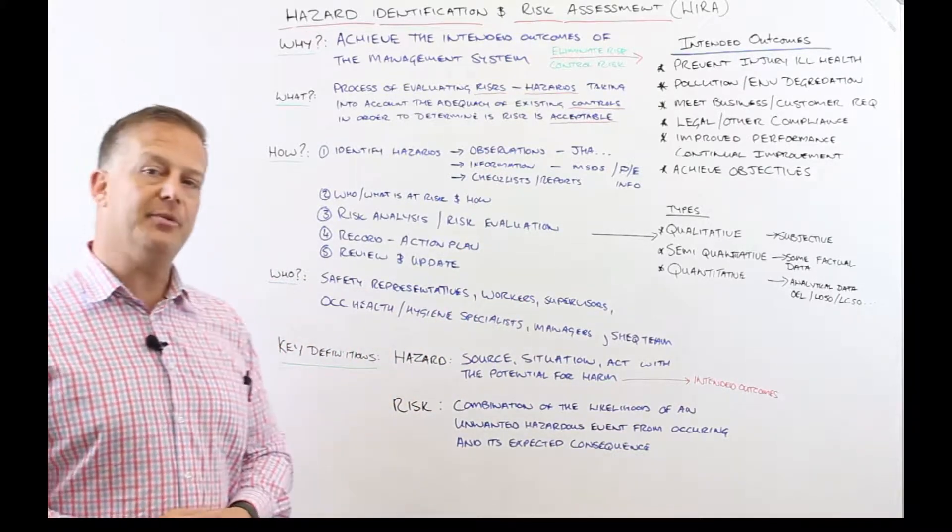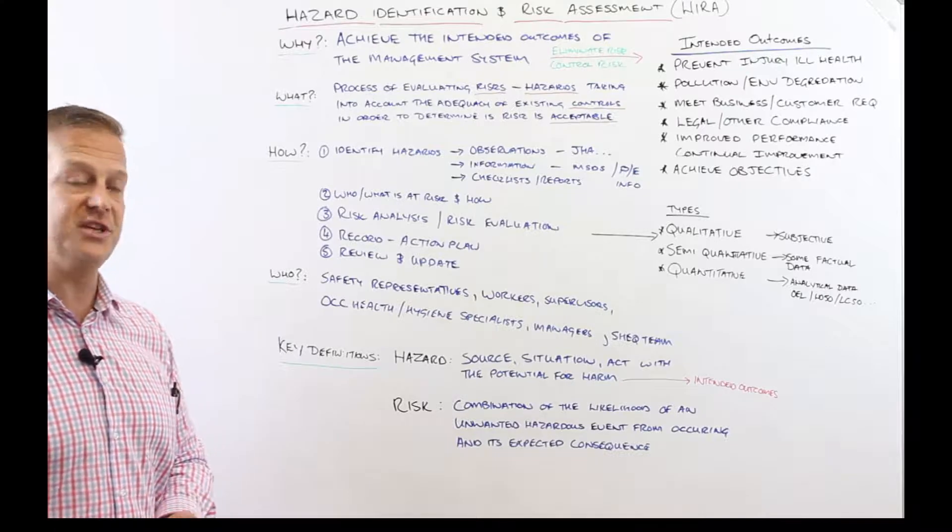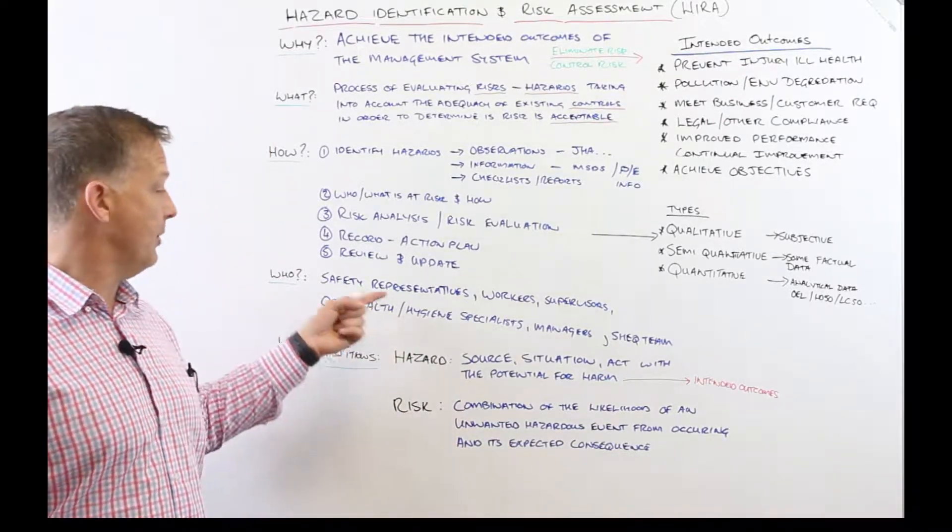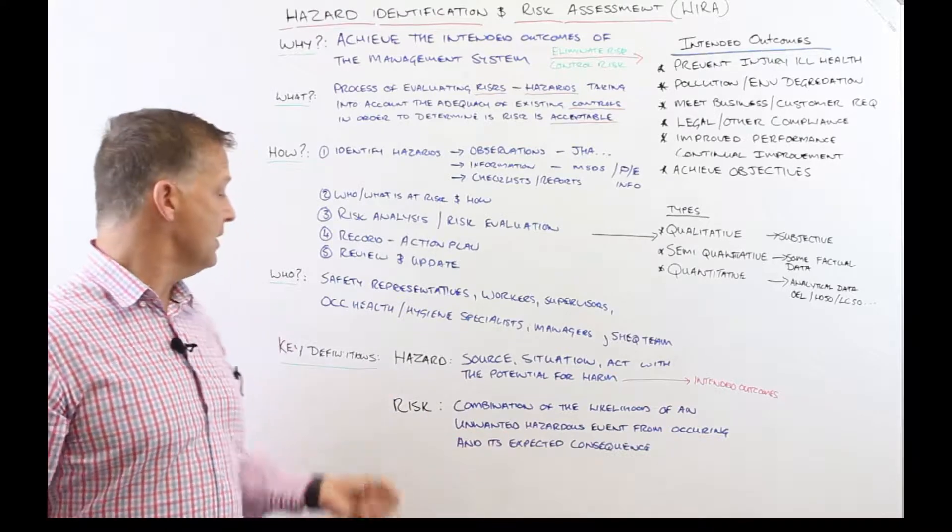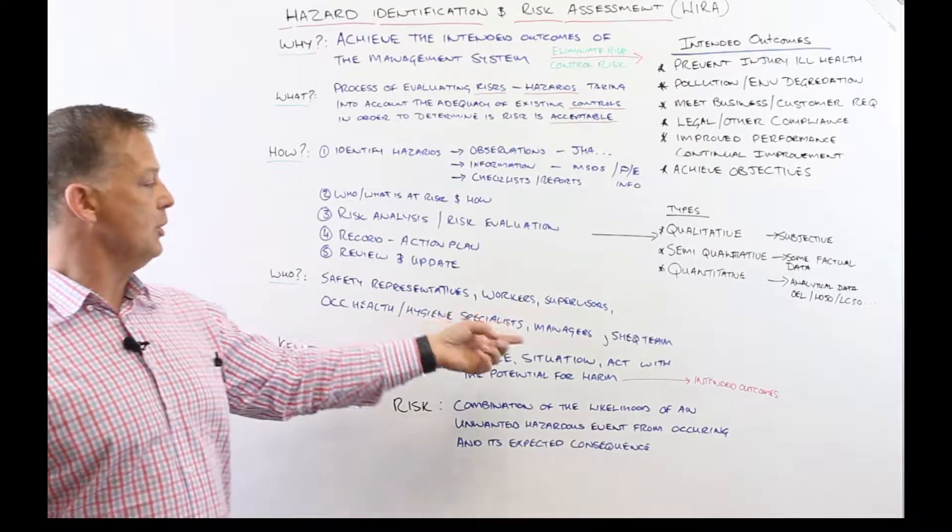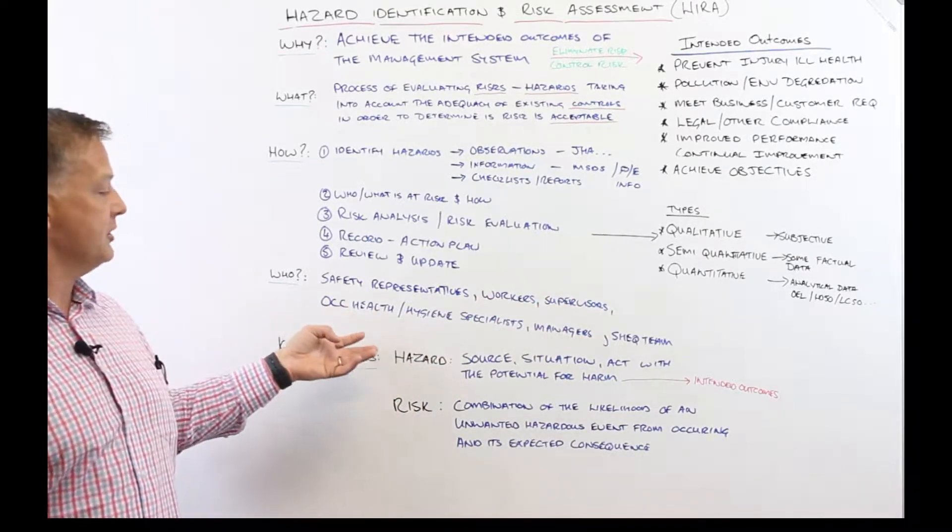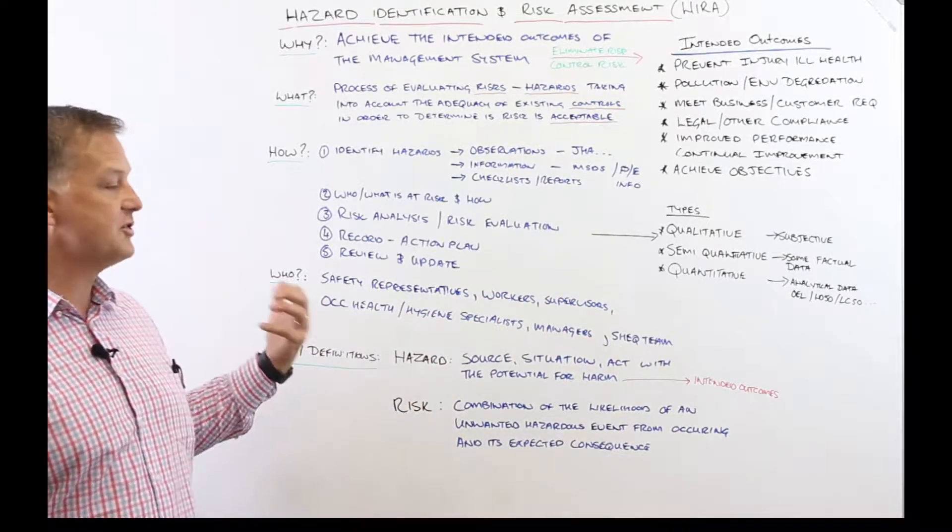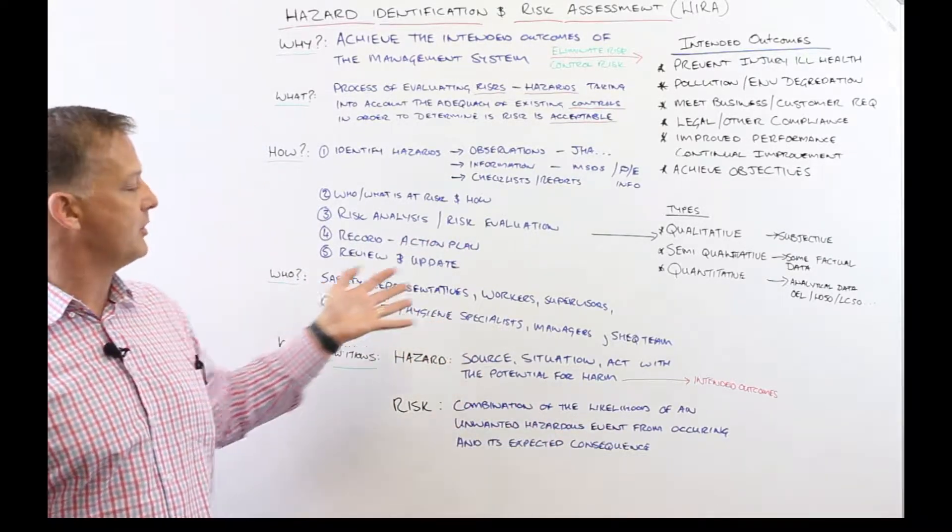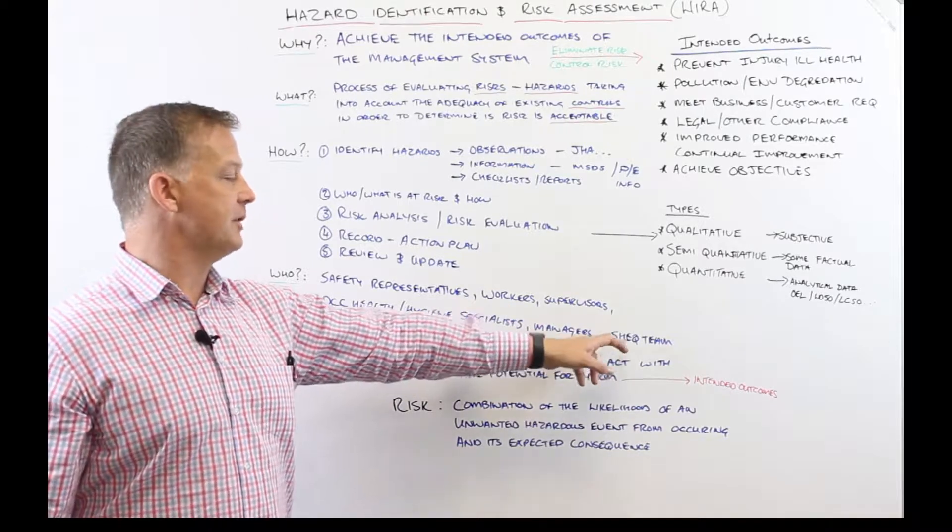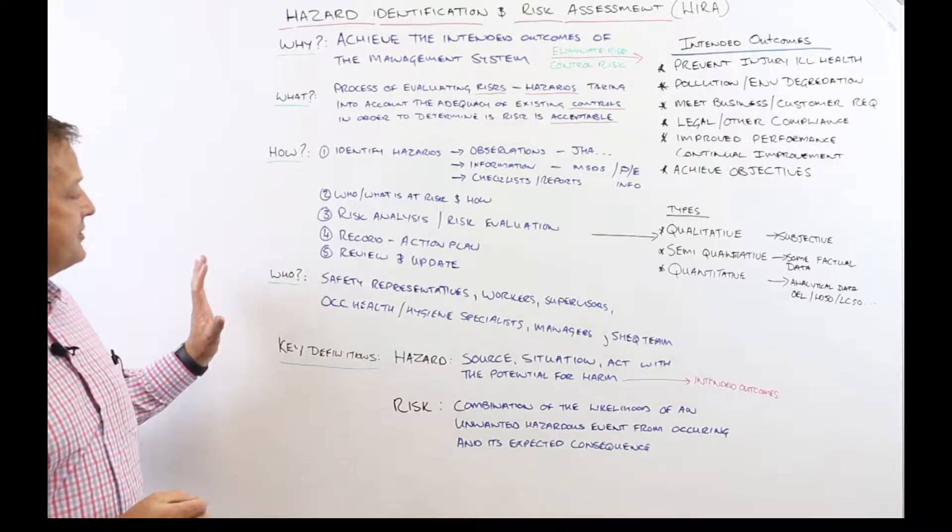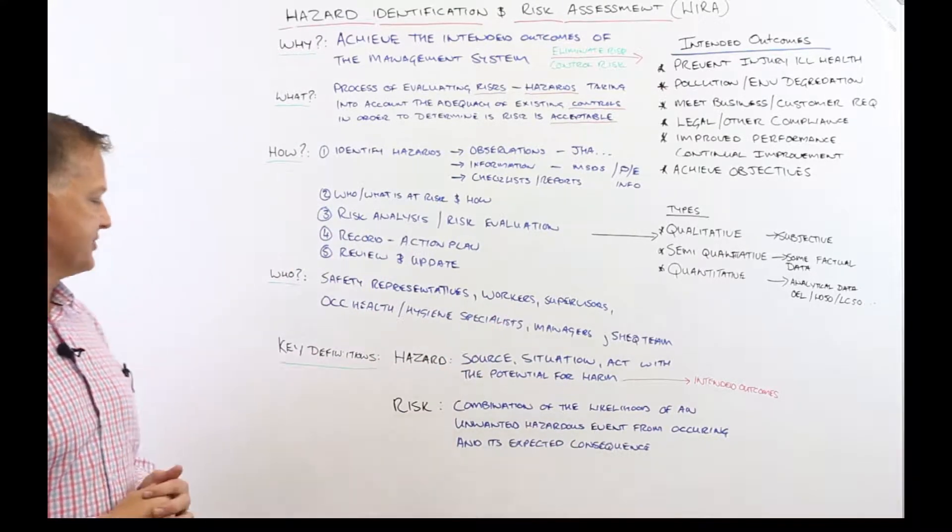Who are the people that are going to participate in your hazard identification risk assessment process? Some are in fact required by law, such as your safety representative - the person who represents the workers. So safety reps, workers, supervisors, occupational health and occupational hygiene specialists, occupational health nurse, occupational health doctor, your occupational hygienist can be participants. Managers and of course your safety, health, environmental and quality team. Those are some of the participants in the risk assessment.